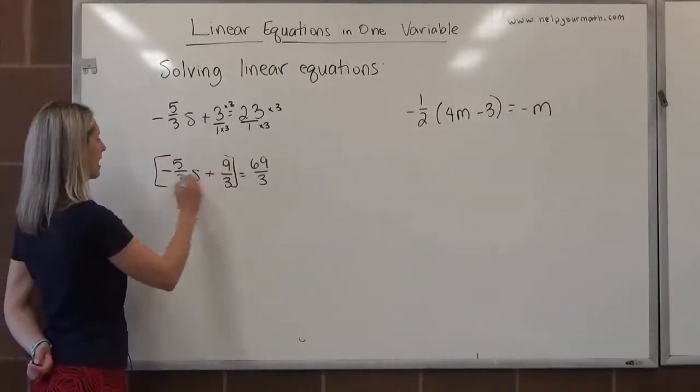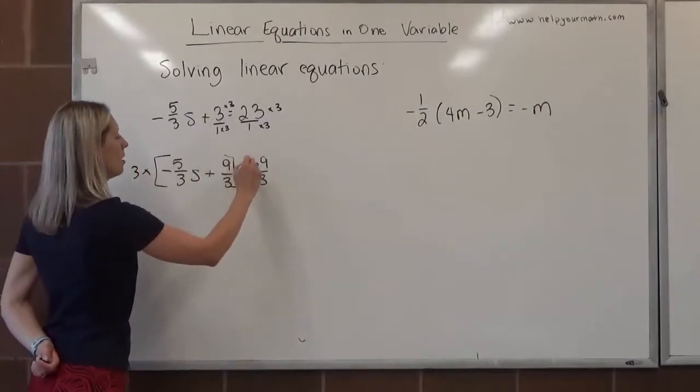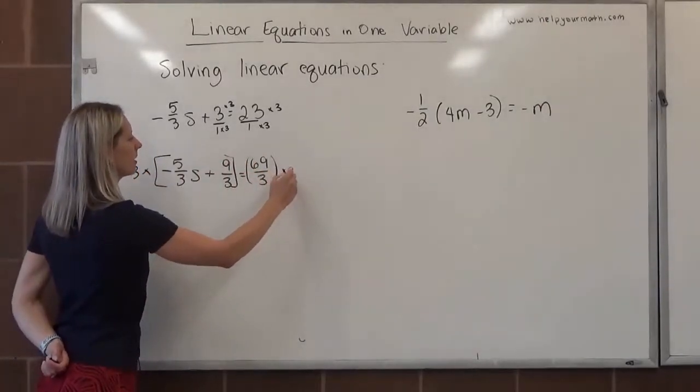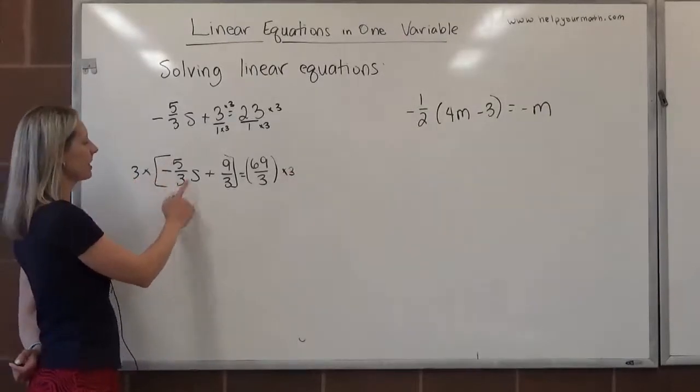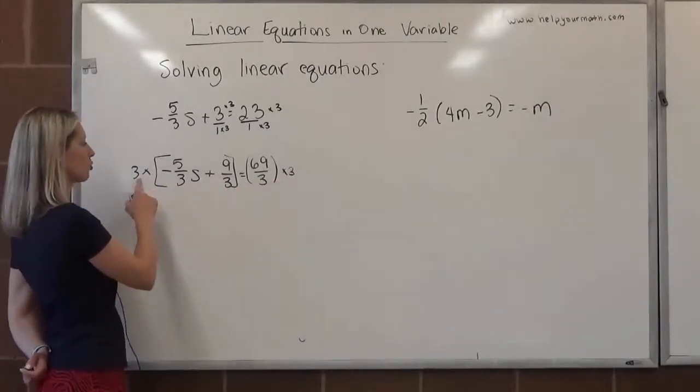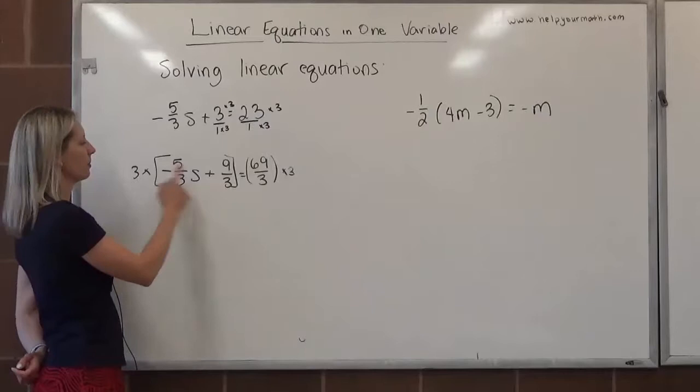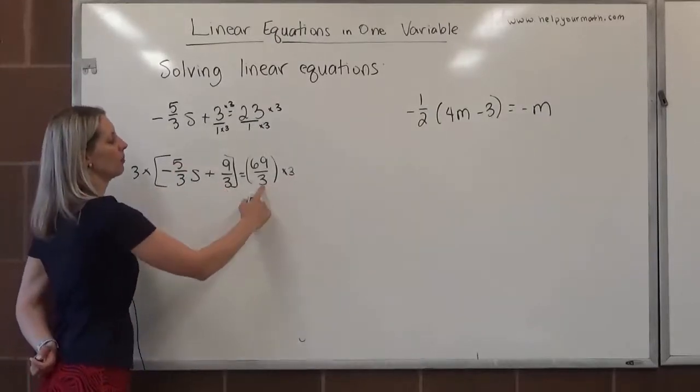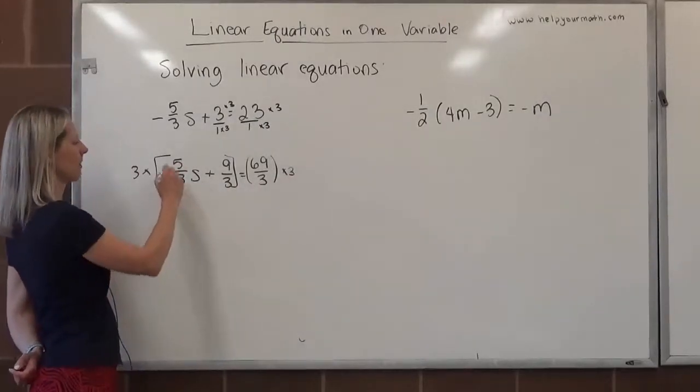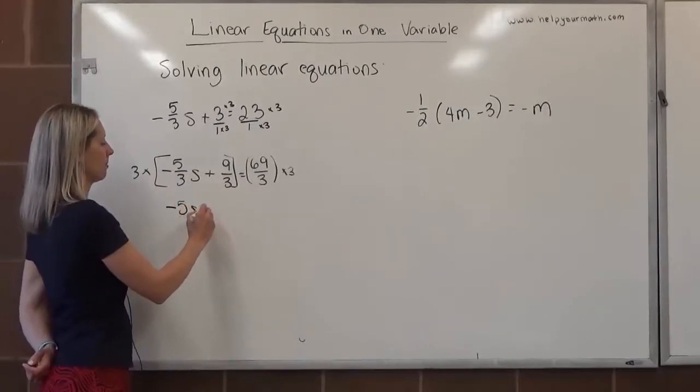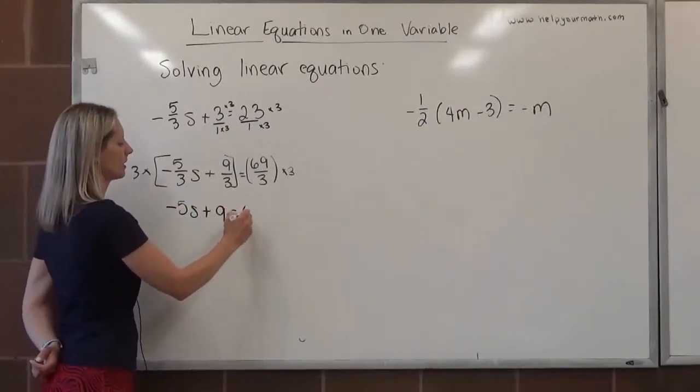Once they all have that same denominator, we can apply the multiplication property of equality, multiply both sides by 3. Multiplying by 3 is going to cancel out each of these divisions of 3. We're left with the numerators: negative 5s plus 9 equals 69.